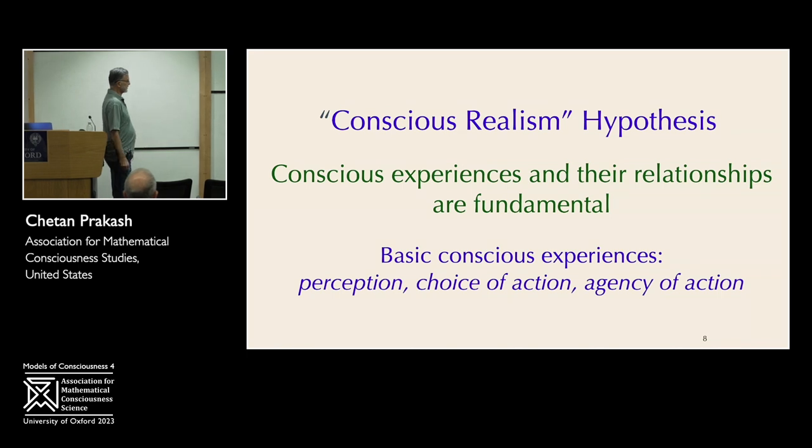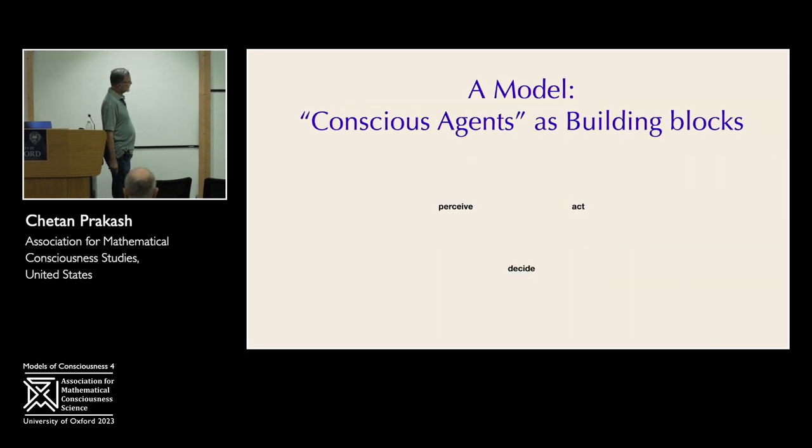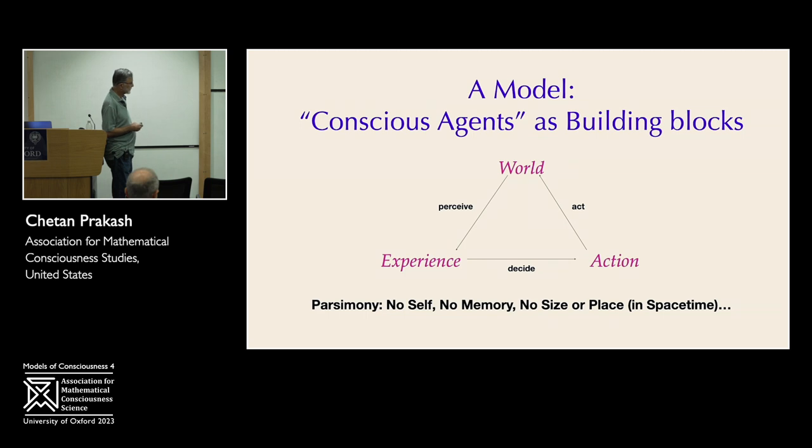Basic conscious experiences that we can all agree on are perception, making choices or decisions, decision-making, and action. So using that, we are defining a model of what we call conscious agents as the building blocks with which we're going to develop the theory of conscious realism. So what is a conscious agent? A conscious agent is something that is an entity that exists in a world, experiences a world, and the way it experiences it is it perceives the world. Having had an experience, it makes a decision on taking an action in the world, and then it performs that action.